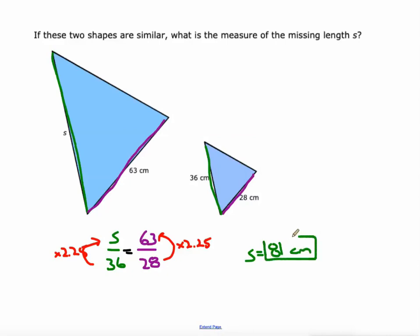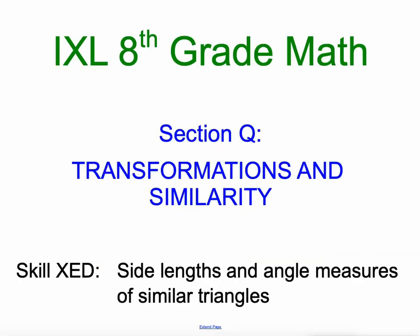All right. So using proportions to find missing sides, and we're also finding missing angles knowing that similar triangles have three pairs of corresponding angles. Good luck to you.